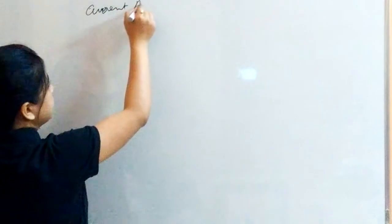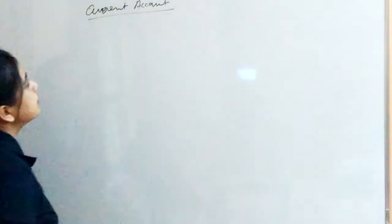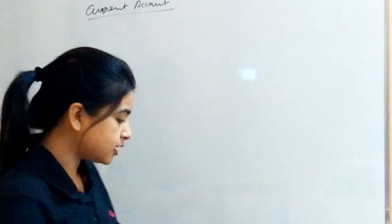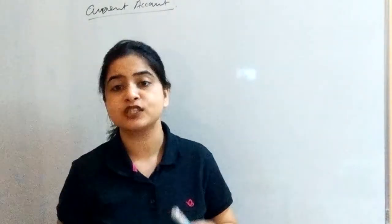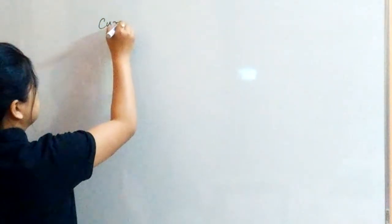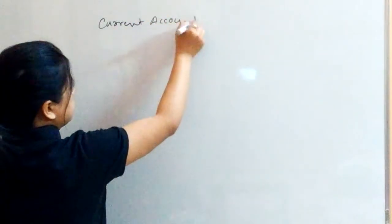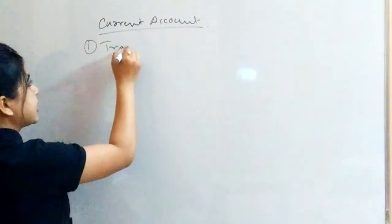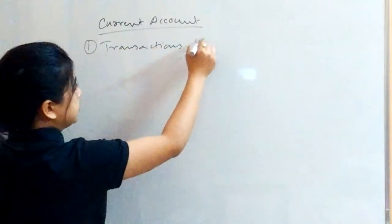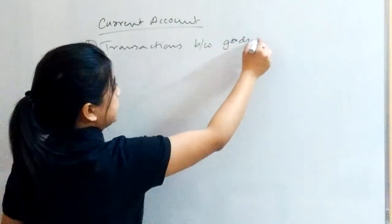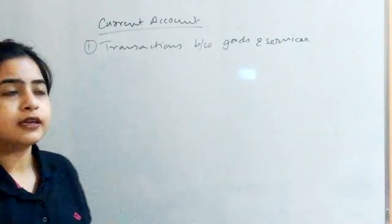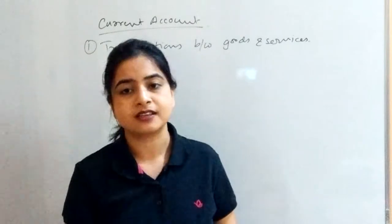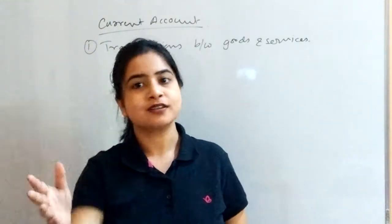Starting with the current account, this mainly captures transactions when they take place in terms of goods and services. So the first point under current account is that it involves transactions of goods and services — those produced in a country and abroad as well.